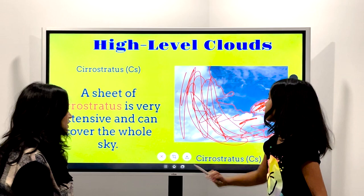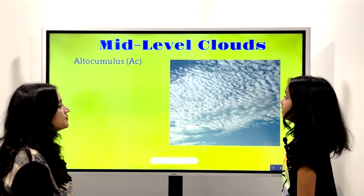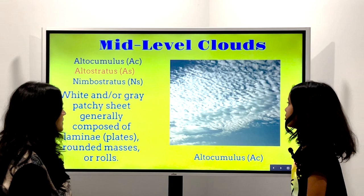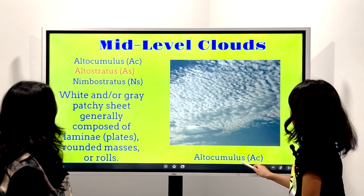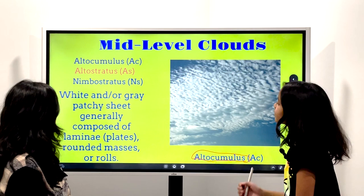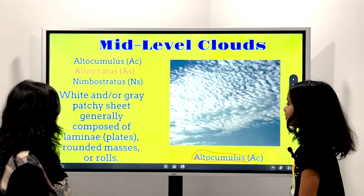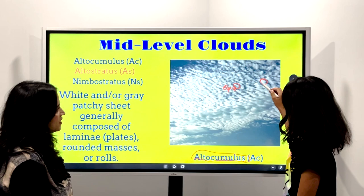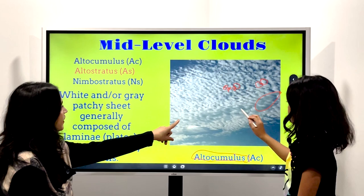Okay, now mid level. Mid level is going to have three types as well — like the same as Altocumulus, which we're doing first. So it's white and gray patchy sheets, composed of laminated plates, rounded masses or rolls. It's kind of the same thing but more closely spaced and a little bit tiny to draw.